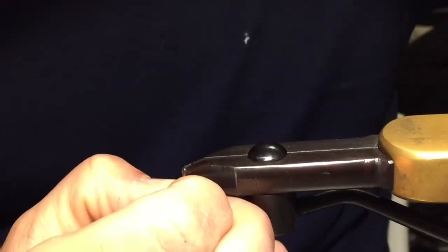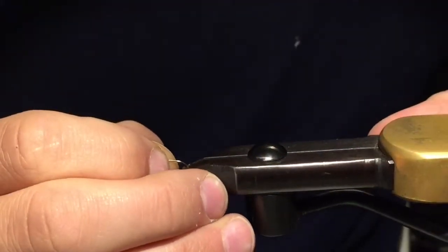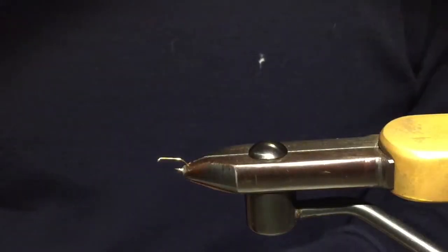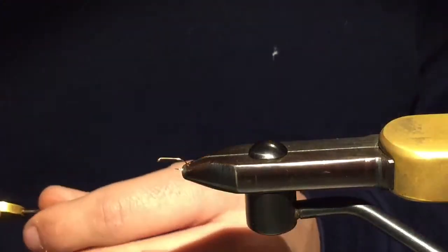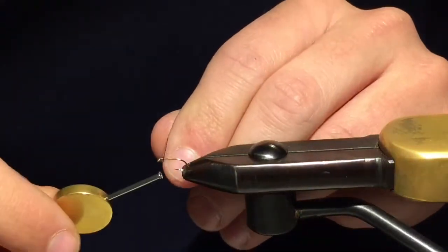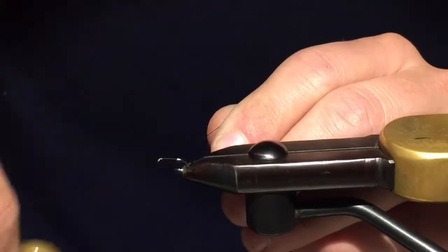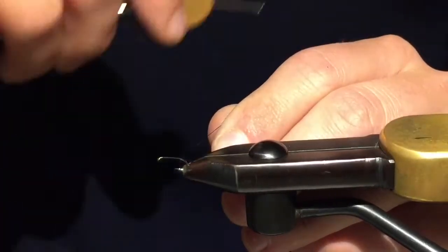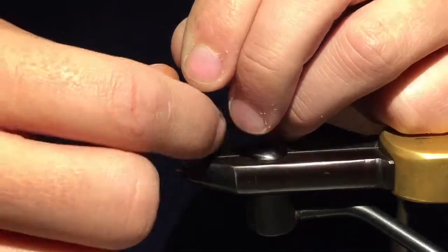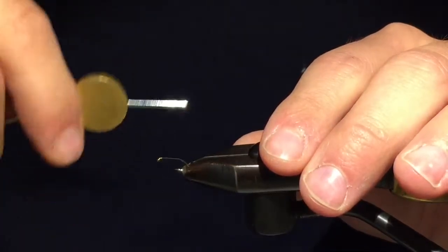So we take the black thread, in this case I'm using 8-0. So let's put on a base of thread here so the materials have something to grab onto, just about down to where the barb used to be. Break off the thread and then go all the way back up just in front of the iron hook like that.